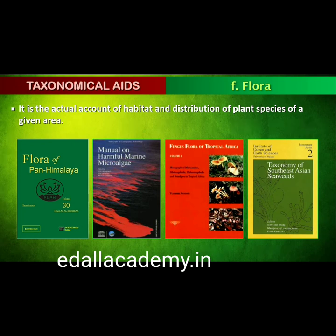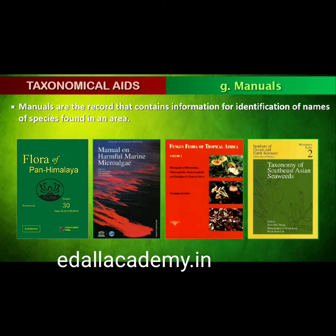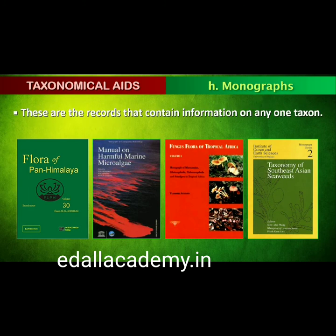Flora, manuals, monographs and catalogs are some other means of recording descriptions that help in correct identification. Flora contains the actual account of habitat and distribution of plants of a given area and provides the index to plant species found in a particular area. Manuals are useful in providing information for identification of names of species found in an area. Monographs contain information on any one taxon.